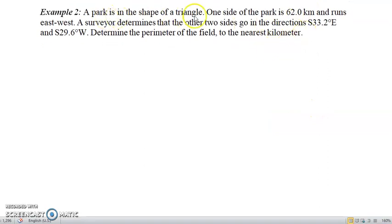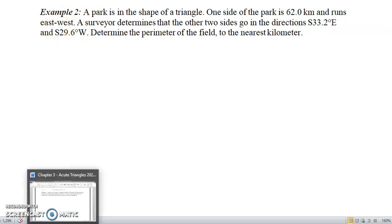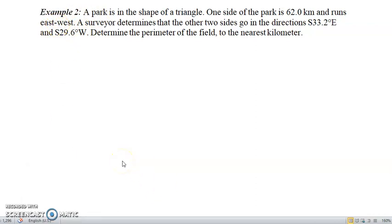Let's look at example number two. A park is in the shape of a triangle. One side of the park is 62 kilometers and runs east to west. A surveyor determines that the other two sides go in the directions S33.2°E and S29.6°W.